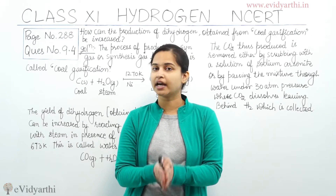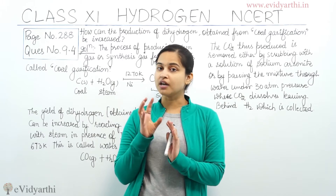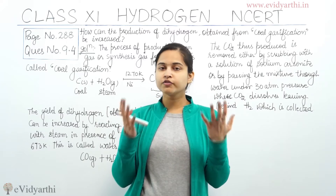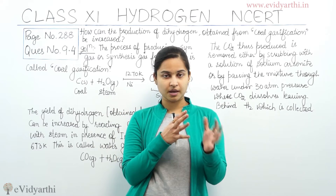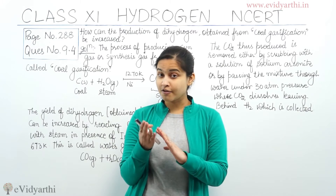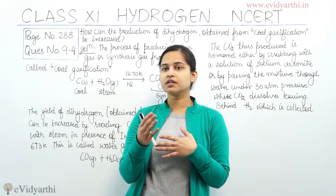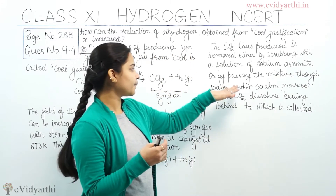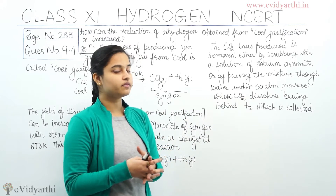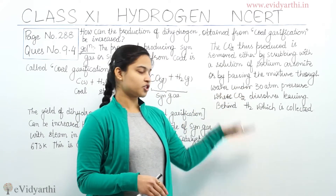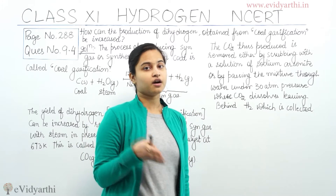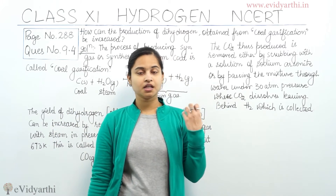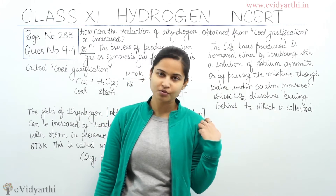Because we need only the dihydrogen production to be increased. The carbon dioxide produced in the water gas shift reaction can be removed by scrubbing that carbon dioxide with a solution of sodium arsenide, or by passing the mixture through water at about 30 atm pressure. In that case, the carbon dioxide will dissolve and we will get our dihydrogen. This is the procedure through which we can obtain the increment in the production of dihydrogen from coal gasification.